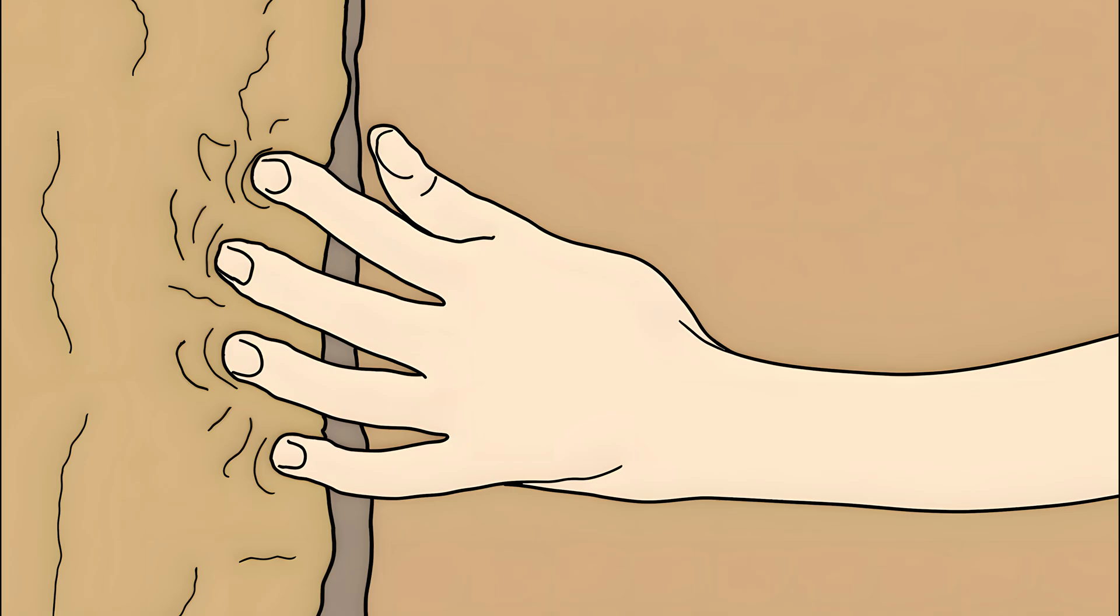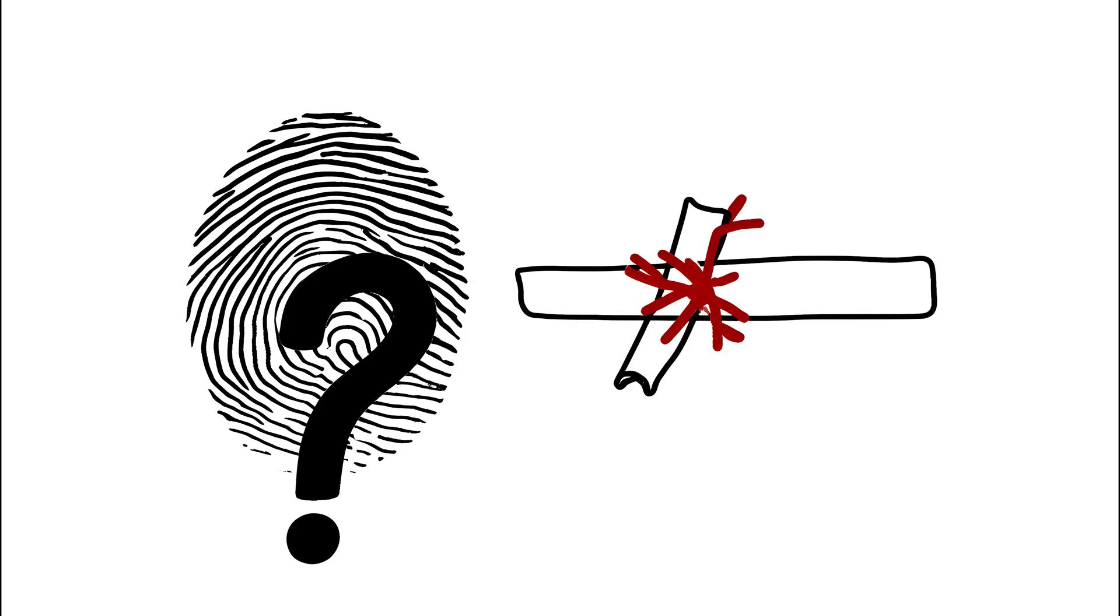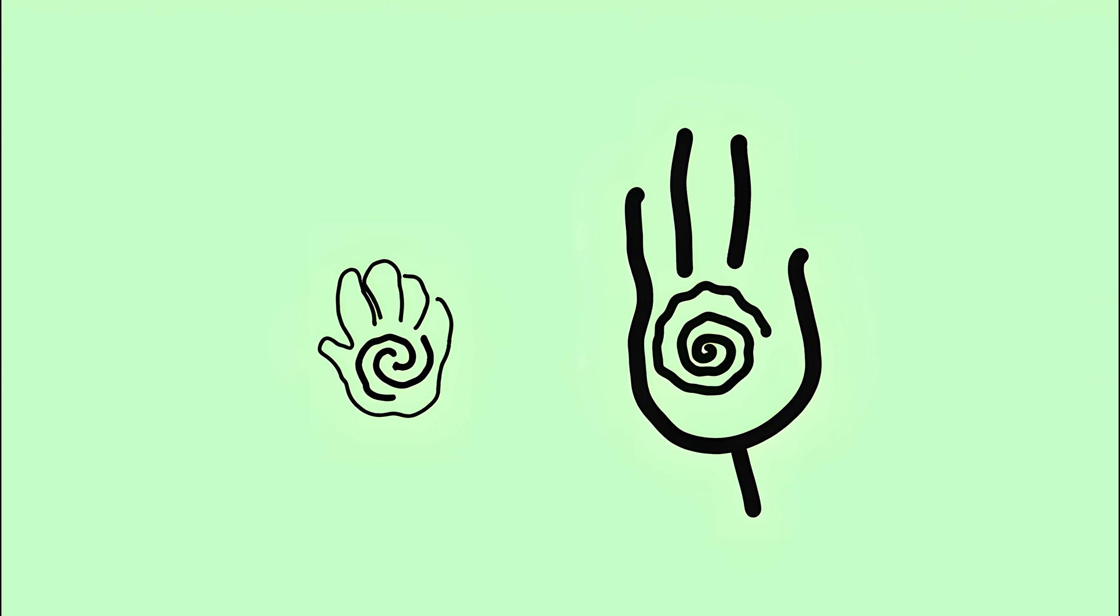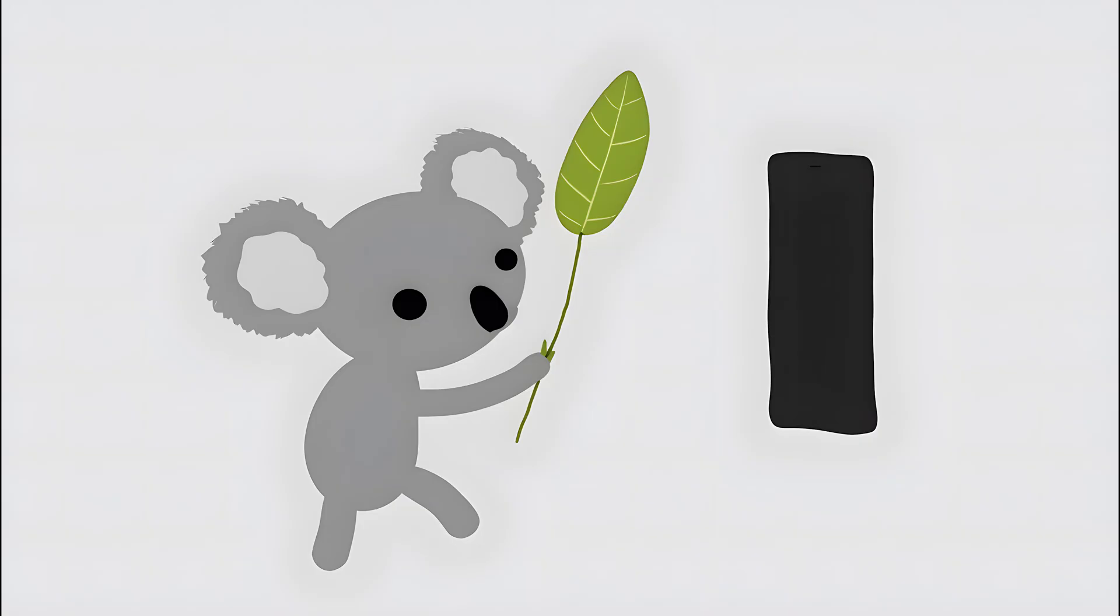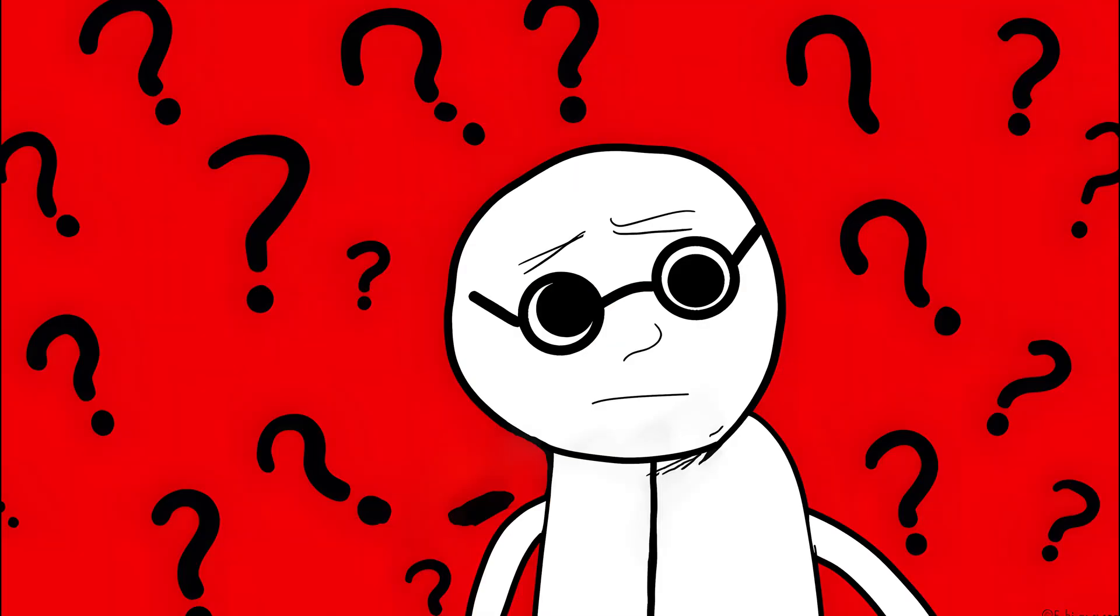Some say it's for grip. Others think it's for sensitivity. But no one's proven the real reason. And get this. Koalas have almost identical prints, so now your phone's face ID is basically one eucalyptus leaf away from unlocking for a small Australian marsupial. Are fingerprints just nature's way of giving us a personal barcode? Science has no clue.